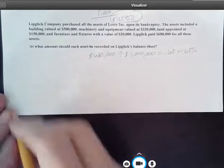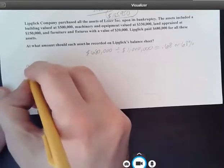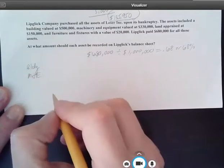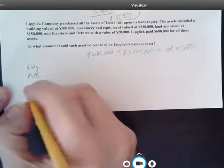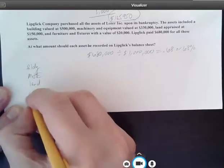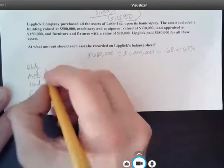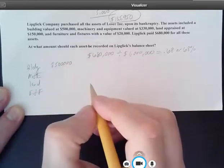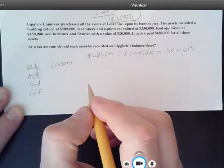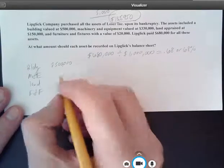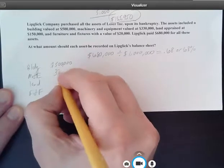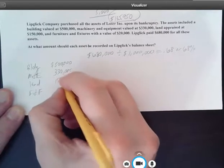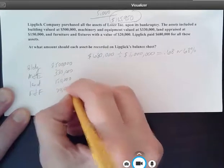And so now what we need to do is we need to take all of these assets. We've got a building, we've got machinery and equipment, we have land, and we have furniture and fixtures. And we're going to plot the market value. And I do realize this is a very easy example, I get that. But we're going to look at an easy example, and then maybe on the test you can do a harder one. What a deal, right? $330,000, land was $150,000, and the furniture was $20,000.